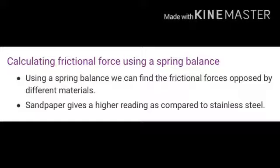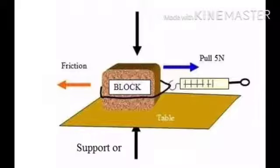Using a spring balance we can find the frictional force opposed by different materials. Sandpaper gives a higher reading compared to stainless steel because sandpaper is rough and stainless steel is smooth. From a demonstration picture, 5 Newtons of friction is shown as being applied on the surface.